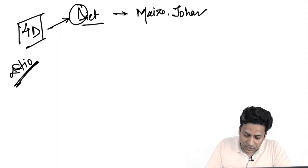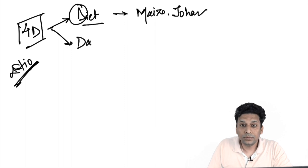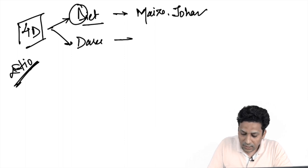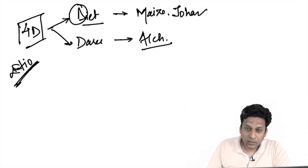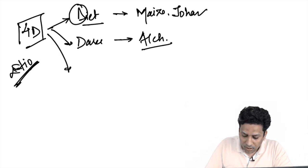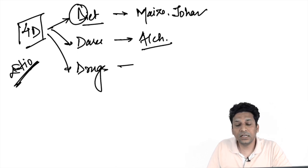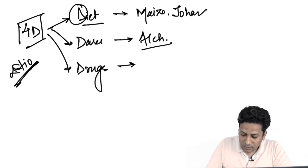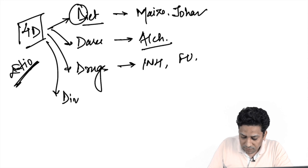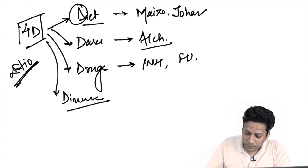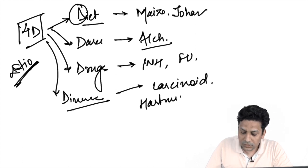The second D is Daru — that is, excessive alcohol intake may hamper the absorption of vitamin B3, thus leading to pellagra. The third D is drugs, because there are certain drugs which can also lead to pellagra, like isoniazid and fluorouracil. The fourth D is other diverse factors like carcinoid syndrome and Hartnup disease.